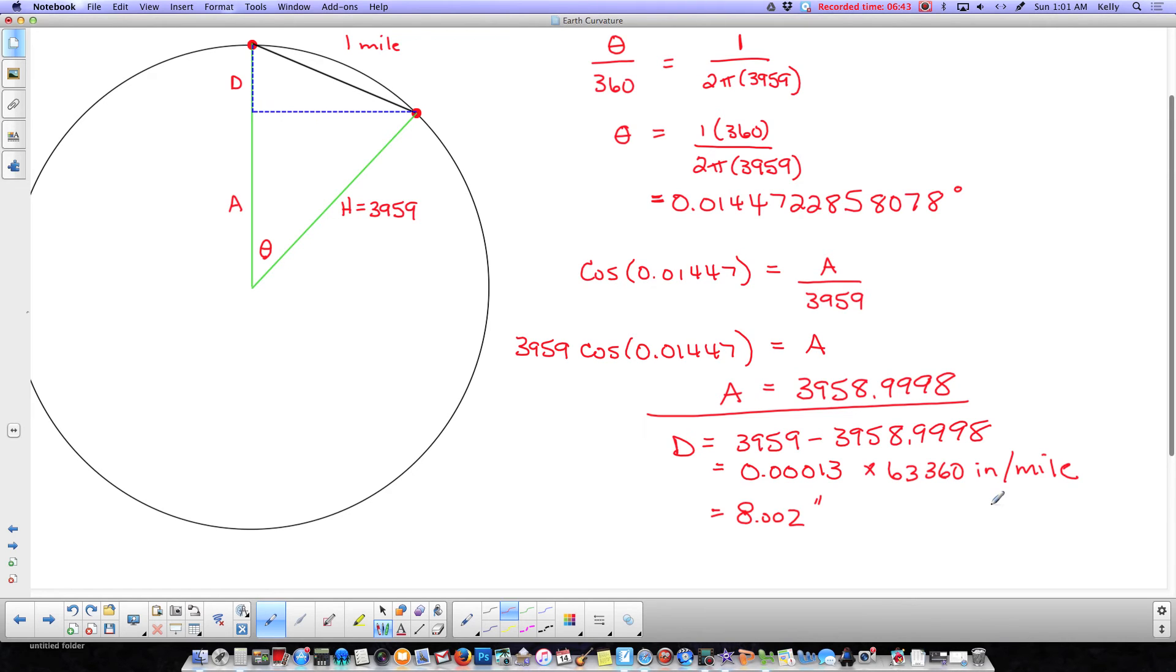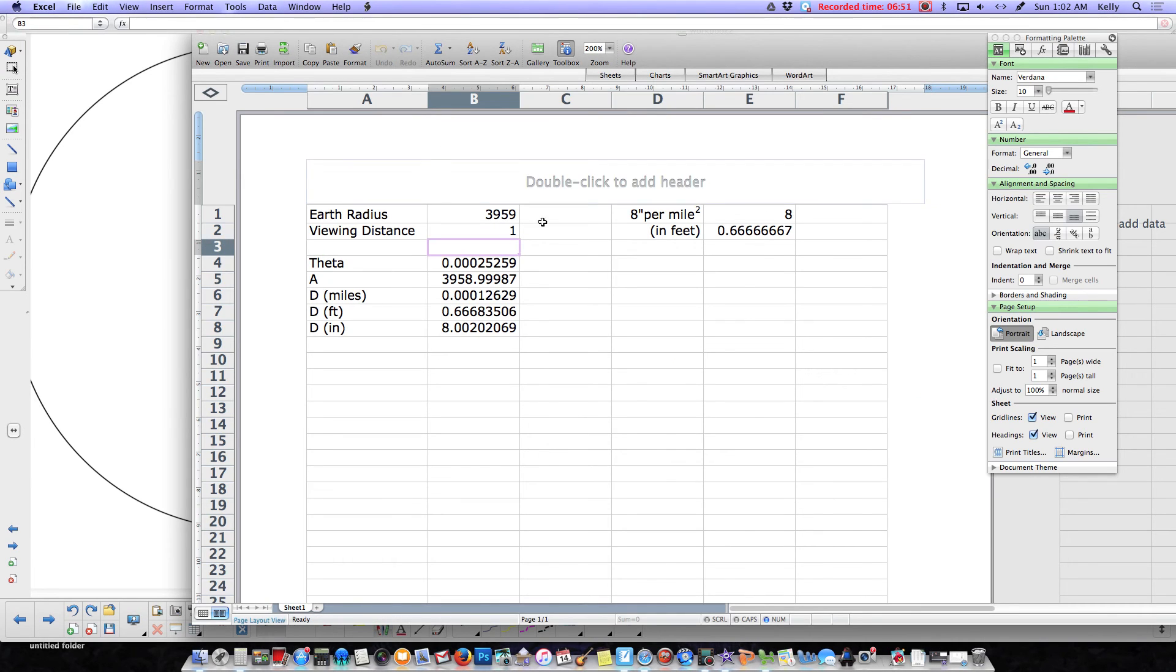Now, we're going to see how well it matches the 8 inches per mile squared for things that are bigger than a mile. I've plugged these formulas into my spreadsheet again, so I'm going to pull up my spreadsheet, and you can see I've got the viewing distance of one mile and the radius of the Earth here. The theta, you can't really compare the theta because the spreadsheet works in radians, not degrees. And when I did it, I worked in degrees, so that theta won't match, but the rest of the stuff will.